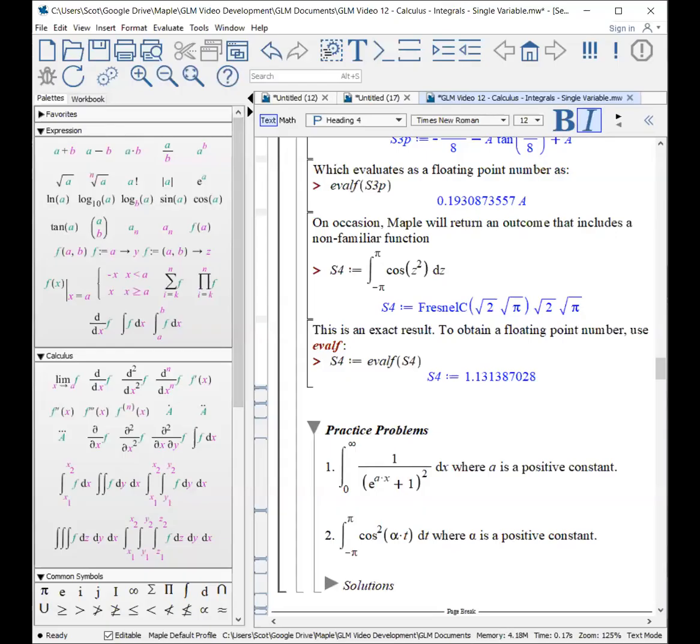I should also point out that occasionally Maple will come back with an expression you don't know anything about. So this is actually a definite integral which goes from some value to some other value. And again, what Maple is going to do is try to return the most exact expression. So it came back with this thing called the Fresnel function. It's kind of like a sine, like a cosine. There's all bunch of functions out there. And this has it with the exact value.